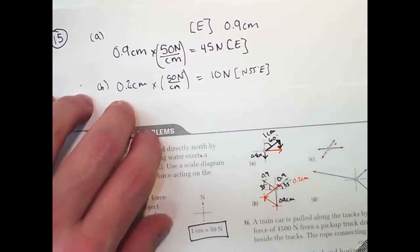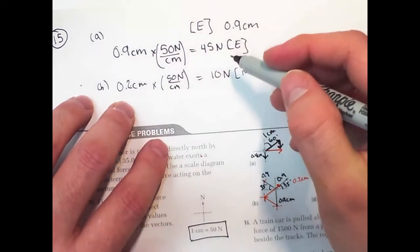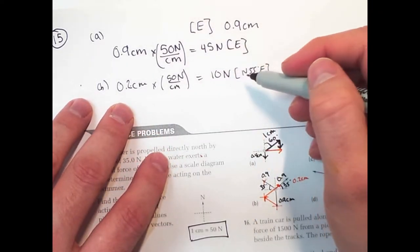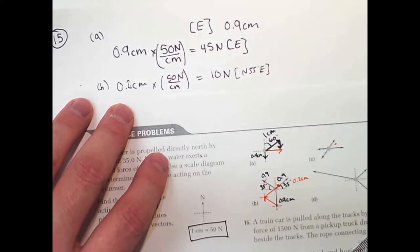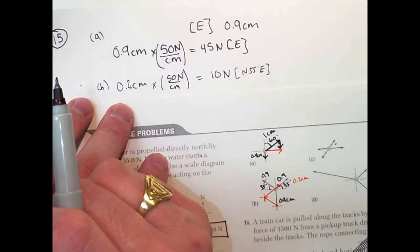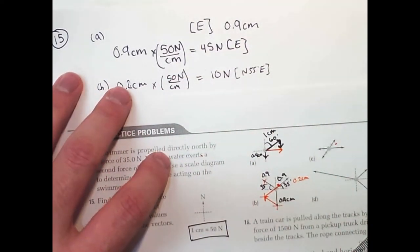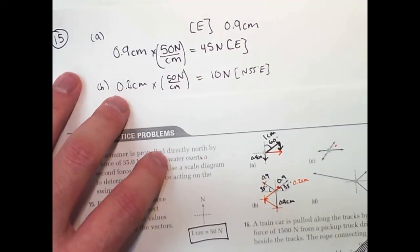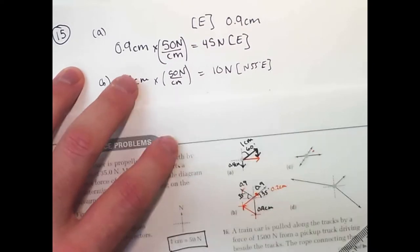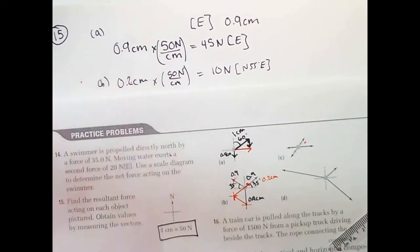It really depends on your measurement. The solution that the book has, which is a little bit more precise, is 7.4 newtons with a measurement of 0.148. The angle is a little bit more to the north. You've got to look at the diagram and take into account that you're going to have some precision problems.